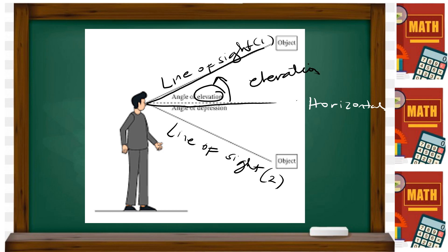If it is an angle from the horizontal to the line of sight going below, that is the angle of depression. The horizontal line is a fixed line. Your line of sight is the line of the observer — either below or above. If it is above, it's an angle of elevation; if it is below, it's an angle of depression.